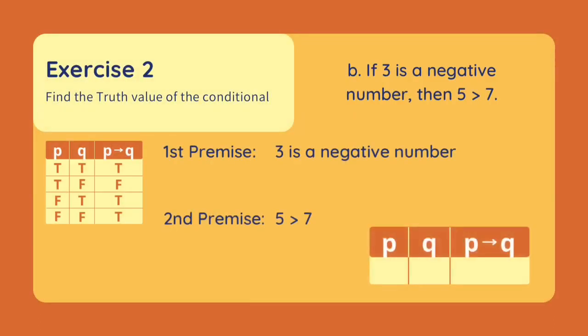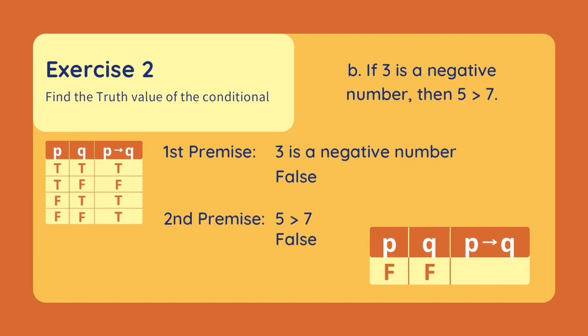Let's have another one. If 3 is a negative number, then 5 is greater than 7. Our first premise is '3 is a negative number.' This is false because 3 can be a negative or a positive number. Our second premise is '5 is greater than 7.' This is also false because 5 is less than 7. Since both our premises are false, our conditional is true.